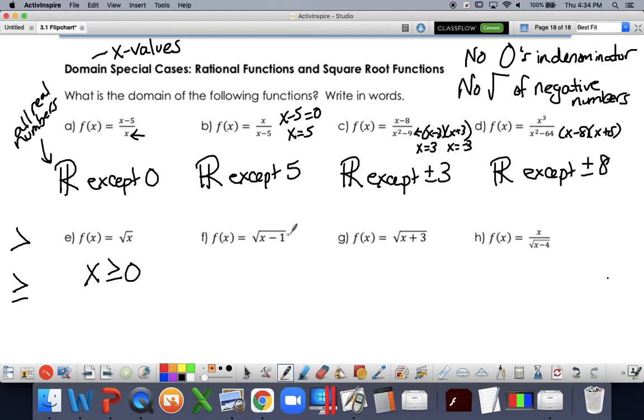In our next case, I want to make sure that whatever is under the square root is greater than or equal to 0. So I'll set up an inequality to solve this. When I solve it, I see that x has to be greater than or equal to 1.